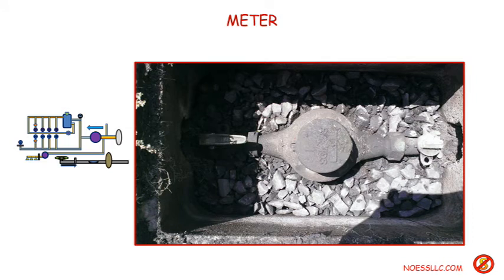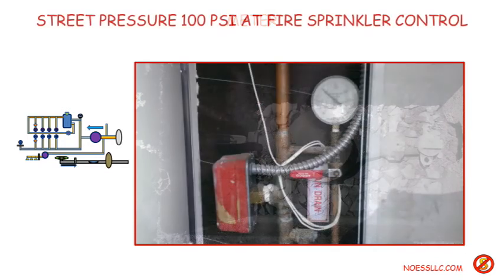Here's the water meter. On the right side is a shut-off valve so the city can shut off water from the street, and on the left side is a slightly larger lever to shut off the house side. The meter itself is a positive displacement meter — it has a little whirly-gig inside that wobbles around and drives all the needles.